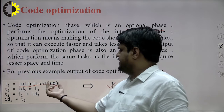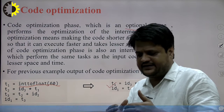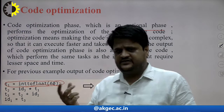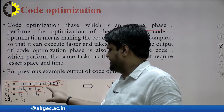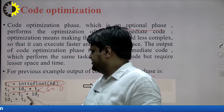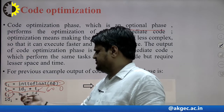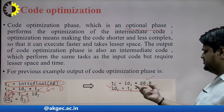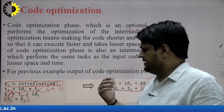At compile time, the compiler converts integer 60 to float, so we can eliminate that conversion line and simply write 60.0 directly. After that, T3 has no further use since its value is immediately assigned to ID1, so we replace T3 with ID1 directly. After code optimization, only two lines of code remain: T2 = ID3 * 60.0, ID1 = ID2 + T2.